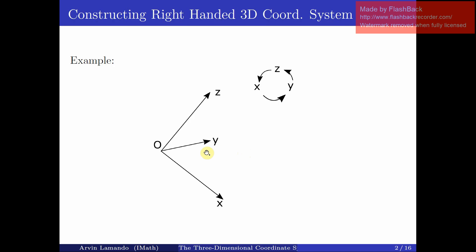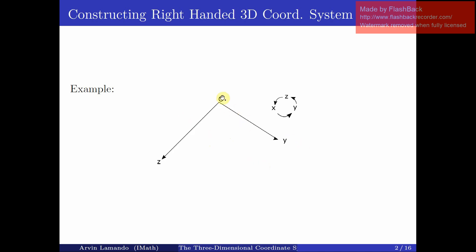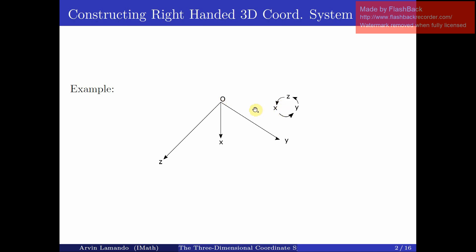Let's work on another example. Suppose we have the following orientation of the z and y-axis. Our mnemonic says the y-axis should curve towards the z-axis. So our hands should be in line with the y direction, and our palm in line with the z direction, such that our fingers can curl towards the z direction. With our thumb outstretched, the right-hand rule gives us the orientation of the x-axis.